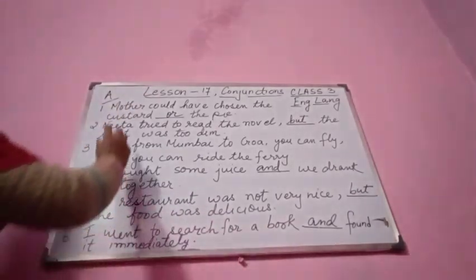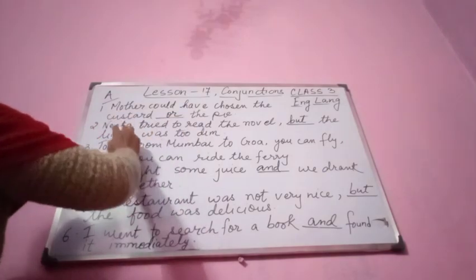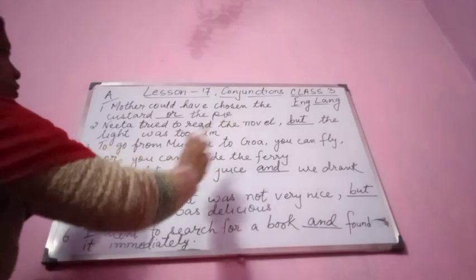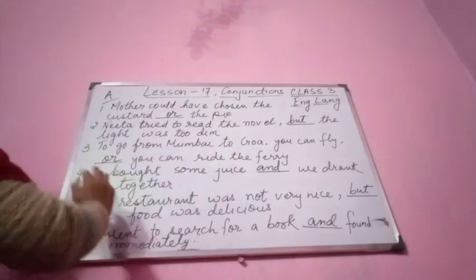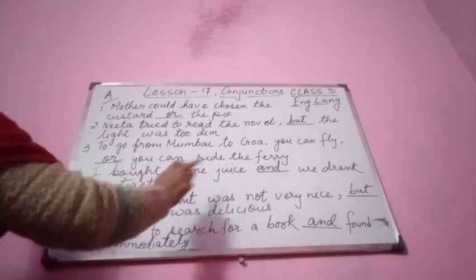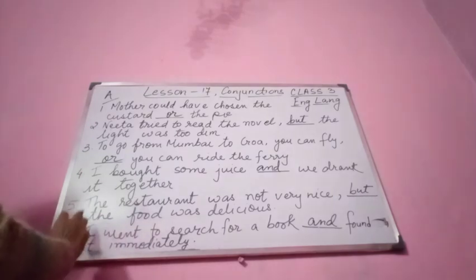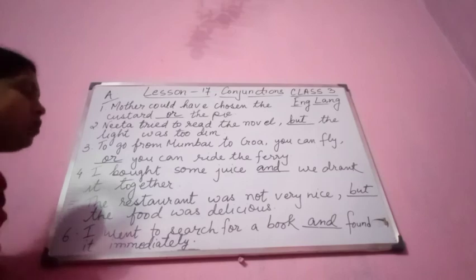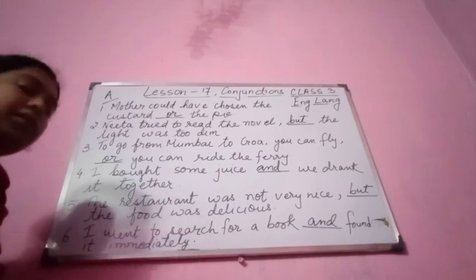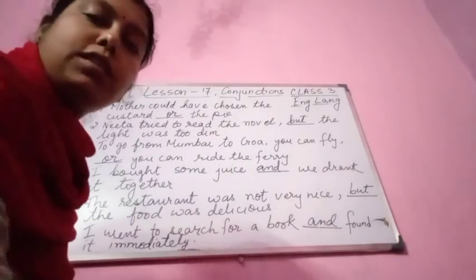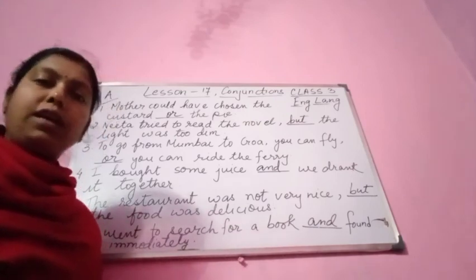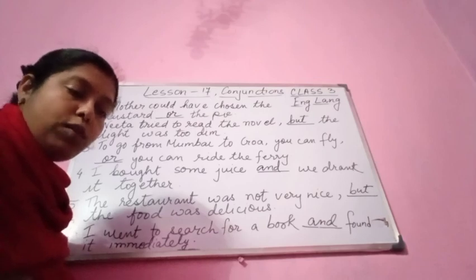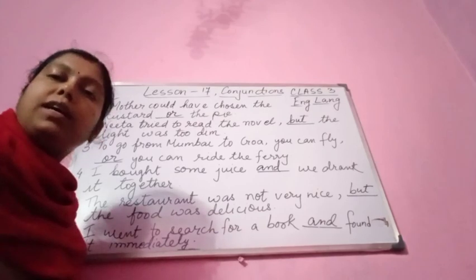Once again the answers: Mother could have chosen the custard or the pie. Nita tried to read the novel but the light was too dim. To go from Mumbai to Goa, you can fly or you can ride the ferry. I bought some juice and we drank it together. The restaurant was not very nice but the food was delicious. I went to search for a book and found it immediately. Children, please do this in your English language copies. Exercise A is done; in our next class we will do Exercise B and C. Thank you.